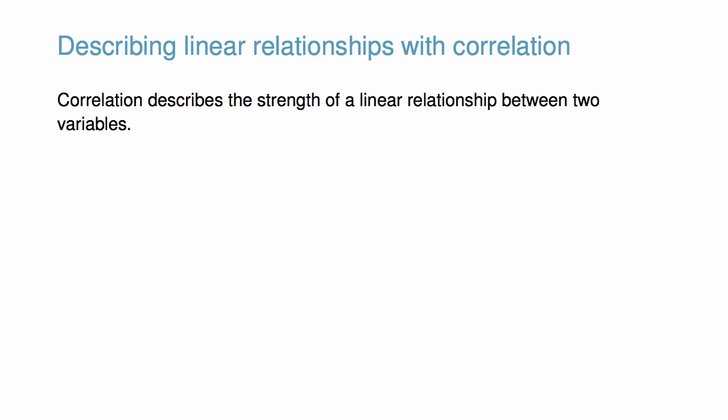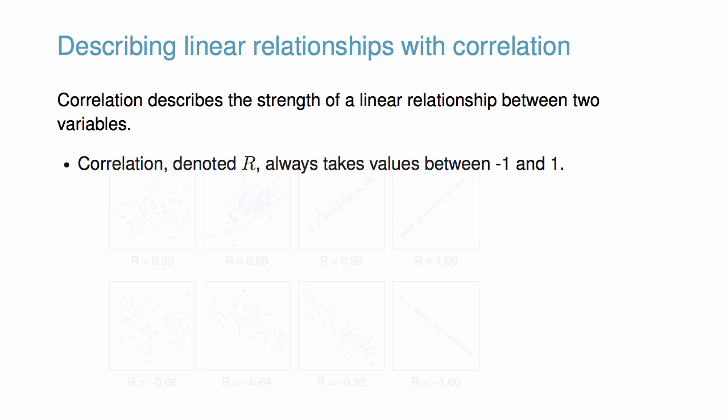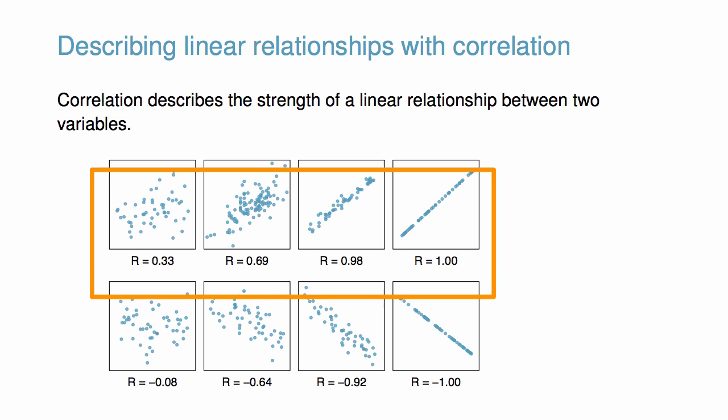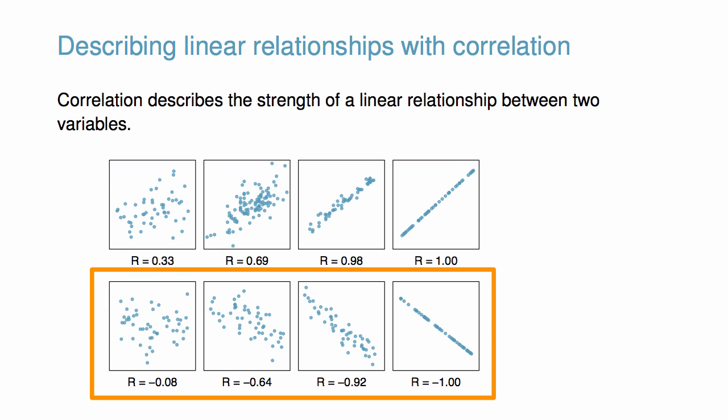Correlation describes the strength of a linear relationship between two variables. Correlation, denoted r, always takes values between negative 1 and positive 1. In these examples, we can see upward sloping data have a positive correlation and downward sloping data have negative correlation. Also, as the data tend towards falling exactly along a straight line, the correlation approaches 1 or negative 1.